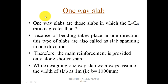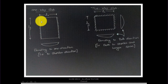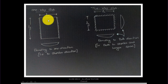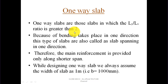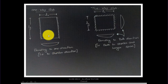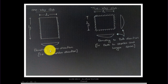One-way slabs are those slabs in which the ly by lx ratio is greater than two. That means the ly length is more than two times the lx length. When ly by lx ratio is greater than two, we design the slab as a one-way slab because bending takes place in only one direction. This type of slab is also called a slab spanning in one direction.